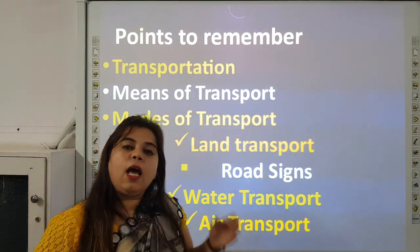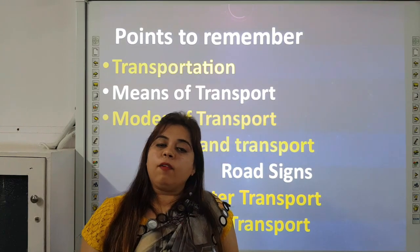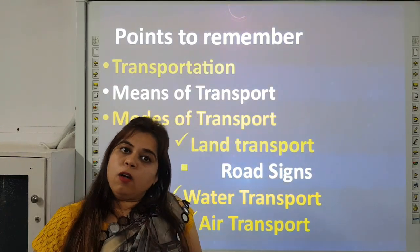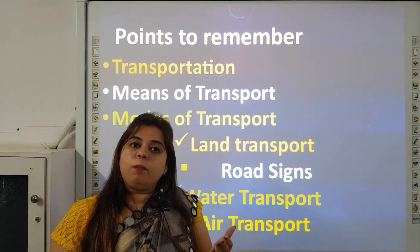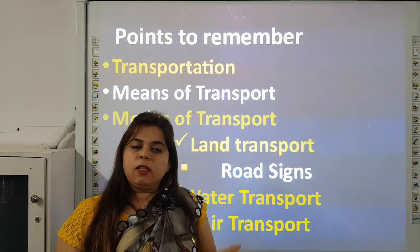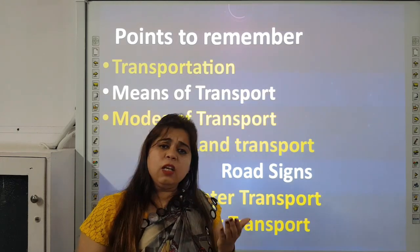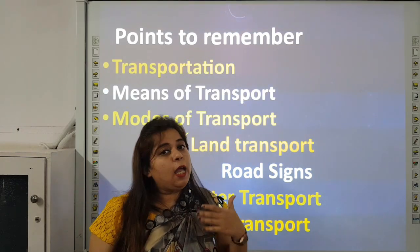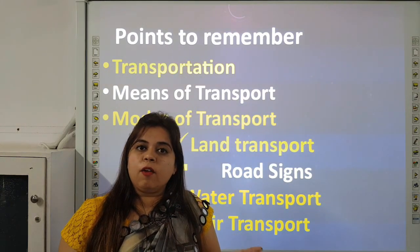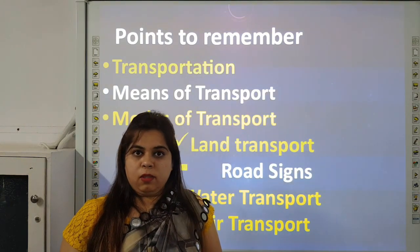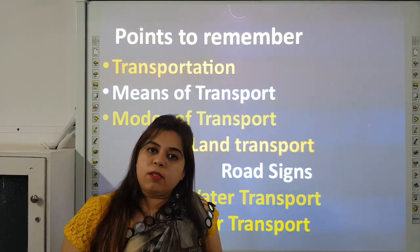We will study first land transport. Land transport means vehicles that run on land and on rails, such as car and bus. Some vehicles are fast and some are slow. Vehicles such as Tonga and Balgadi are slow because they are driven by animals. Vehicles that run on fuel are fast.